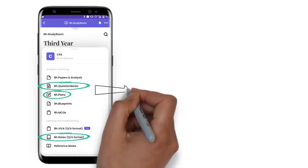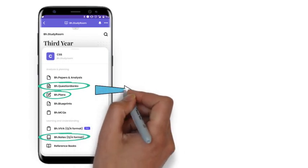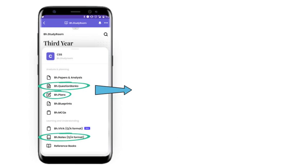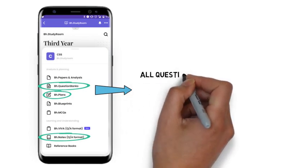And you can get for scoring, these answers are already available in BH Notes. Once you are done with BH Plans, go to BH Question Banks, you will get module wise questions.